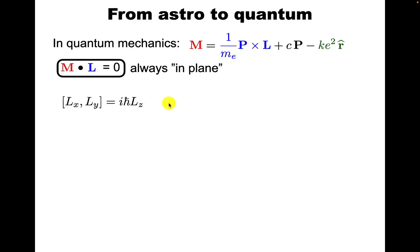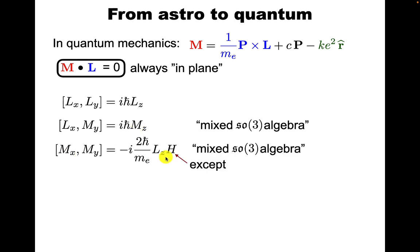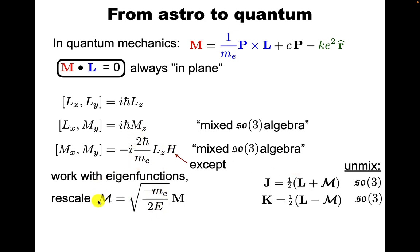Let's repeat, we have this SO3 algebra. Now with this new conserved quantity, we can start considering mixed commutators. And this one is even less nice - it's kind of mixed, but you get a Hamiltonian in there. So you can get rid of the Hamiltonian if you decide to only work with eigenfunctions. Then you can say, I'm going to act on the function, and this brings back the energy, which I call E, and you can rescale M to get rid of these factors 2 and m_e.